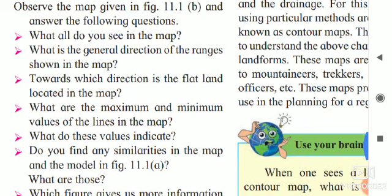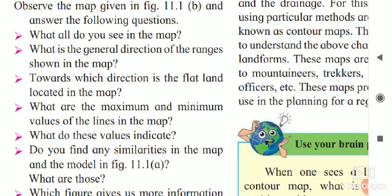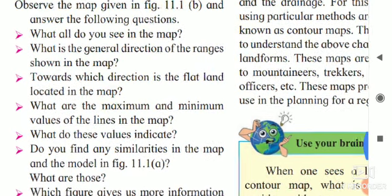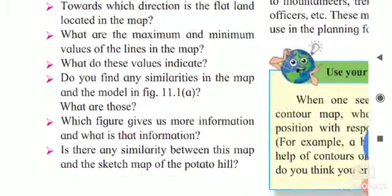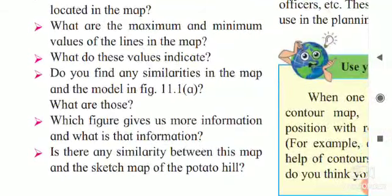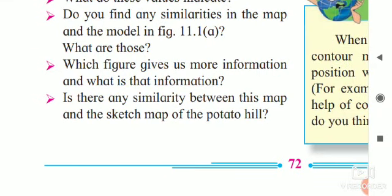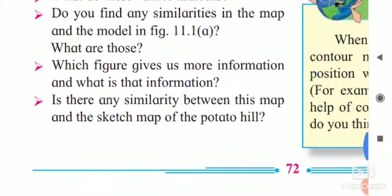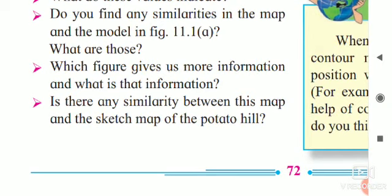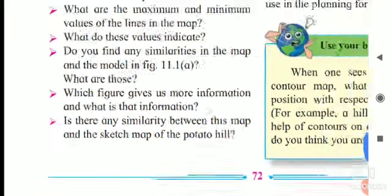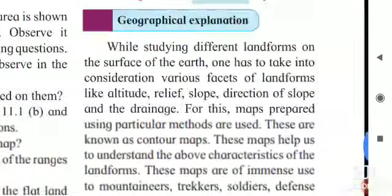What are the maximum and minimum value of the lines in the map? मैप की रेखाओं का न्यूनतम और अधिकतम मूल्य कितना है? What do these values indicate? यह मूल्य क्या दर्शाते होंगे? Do you find any similarities in the map and the model in figure 11.1a? इस map में और तुमने पहले देखी वह प्रतिकृति में कुछ समानता है? यदि है तो वह कौन सी है? What are those? Which figure gives us more information? And what is that information? कौन सी आकृति अधिक जानकारी देती है? और वह जानकारी कौन सी है? Is there any similarity between this map and sketch map of the potato hill? तुम्हारा तैयार किया हुआ आलू पर्वत का ढांचा और इस map में क्या कुछ समानता है?